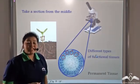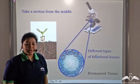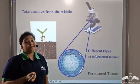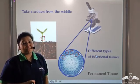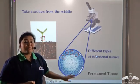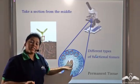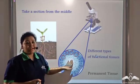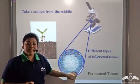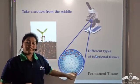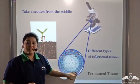The permanent tissue does not grow and has lost the ability to grow any further. So the permanent tissue does not divide and does not grow, but it contains a lot of different cells that perform different functions in the plant.